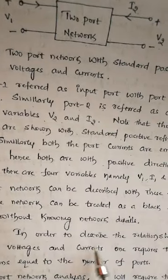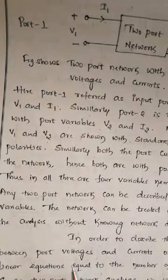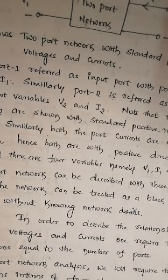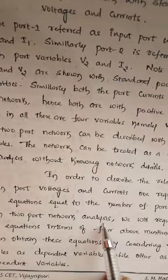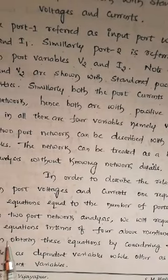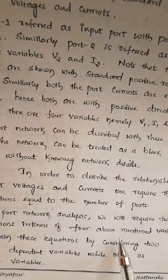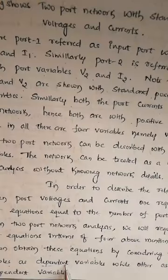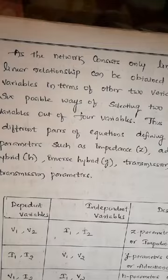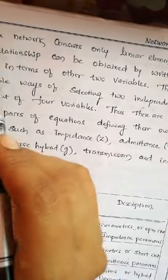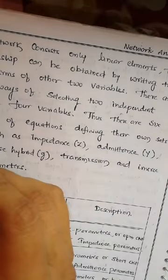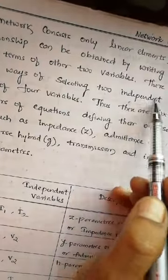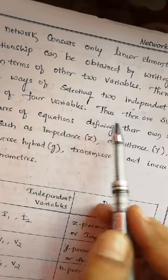In order to describe the relationship between port voltages and currents, one requires linear equations equal to the number of ports. So in two-port network analysis, we require two linear equations in terms of the four variables V1, V2, I1, and I2. We can obtain these equations by considering two variables as dependent and the others as independent. Since the network consists of only linear elements, there are six possible ways of selecting two independent variables out of four.